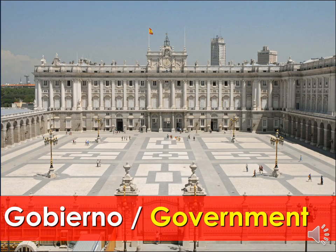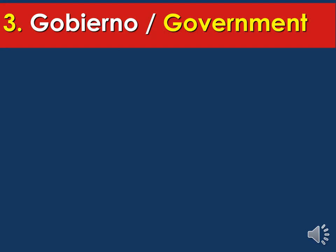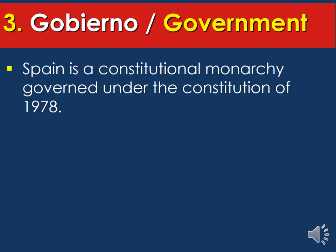Gobierno — government. If you remember, España is a sovereign country, meaning it is ruled by a monarch. Being ruled by monarchs, you'll find palaces all over España. This palace is the Royal Palace of España located in Madrid. The king and queen don't live there anymore — they only use it for proper ceremonies. Spain is a constitutional monarchy governed under the constitution of 1978. Prior to 1978, Spain was under a dictatorship, but after the dictator was overthrown, the monarchy came into place and everything settled down.